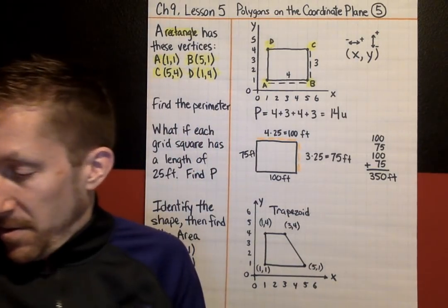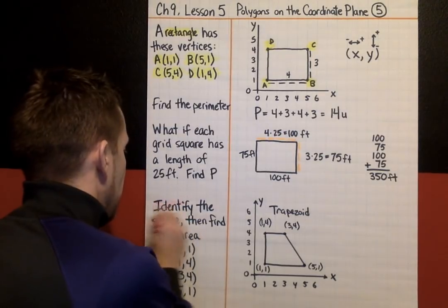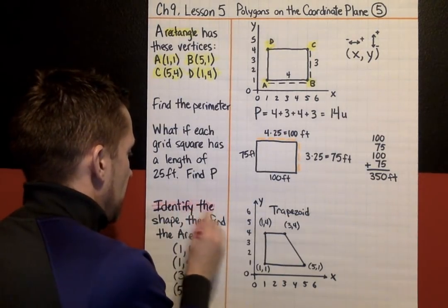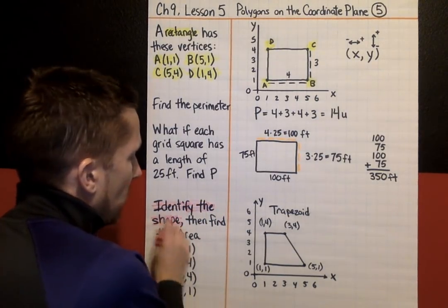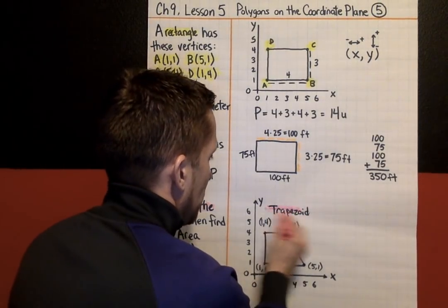Okay, so step one or first question, identify the shape, we've done that. After we graphed our ordered pairs onto a coordinate plane, our shape is a trapezoid.